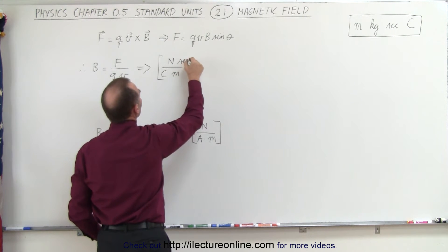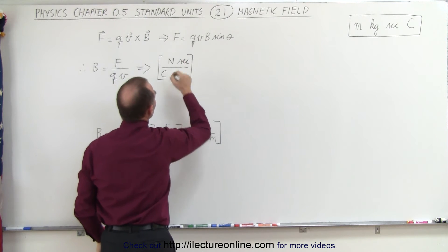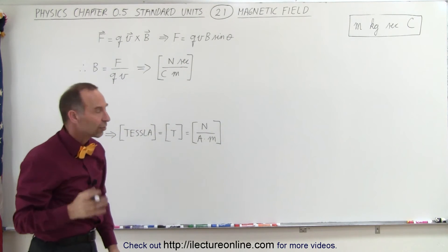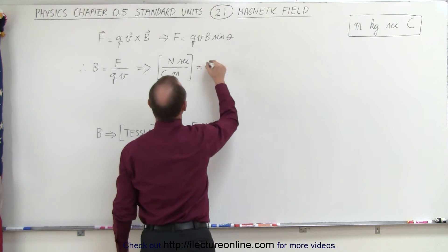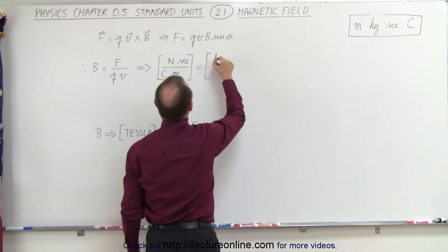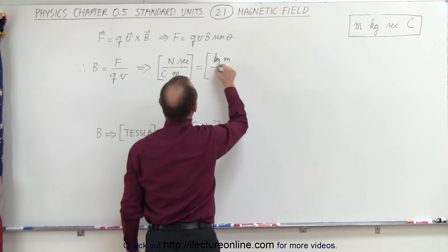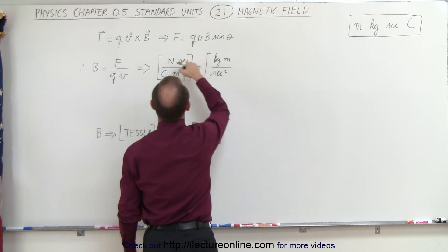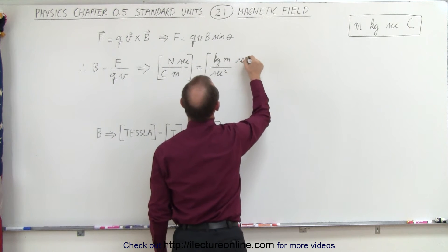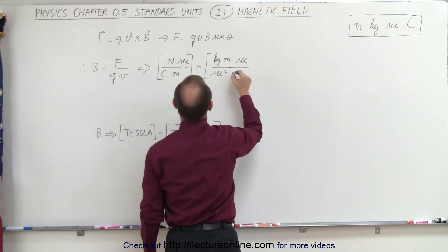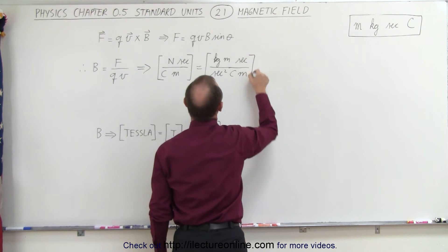Which means the second goes to the numerator. Expanding this, we can then take newtons and express it in terms of what newtons are equal to: kilograms meters per second squared. That's for newtons, times seconds in the numerator, divided by coulombs times meter in the denominator.